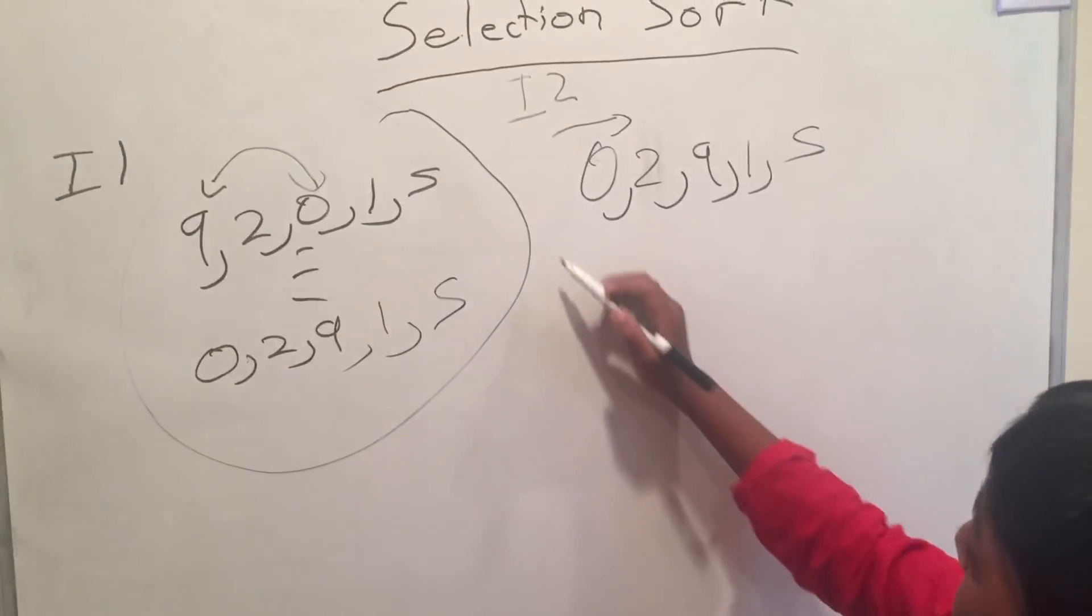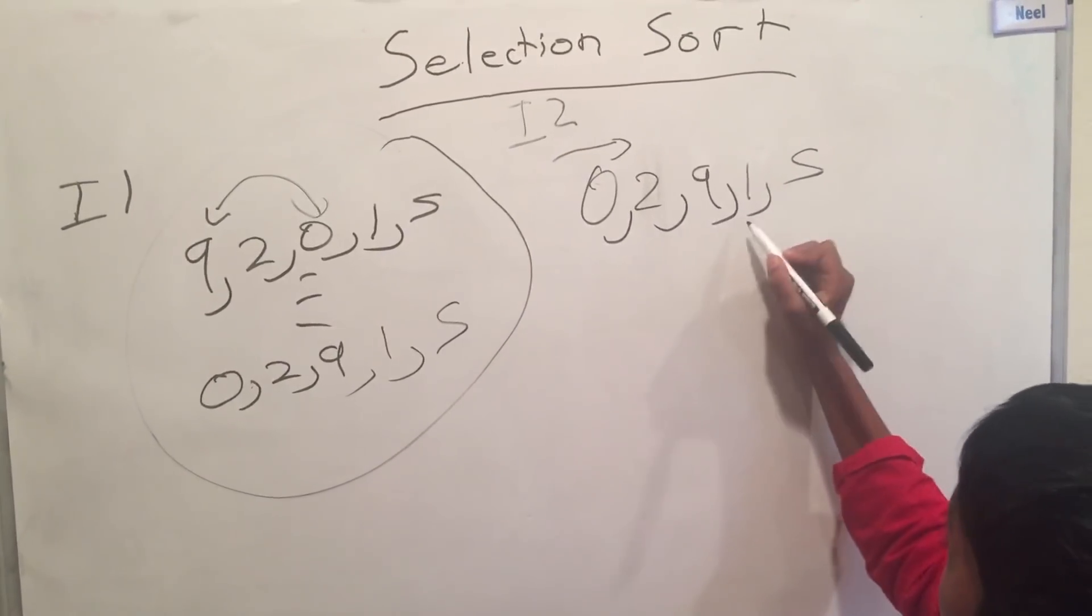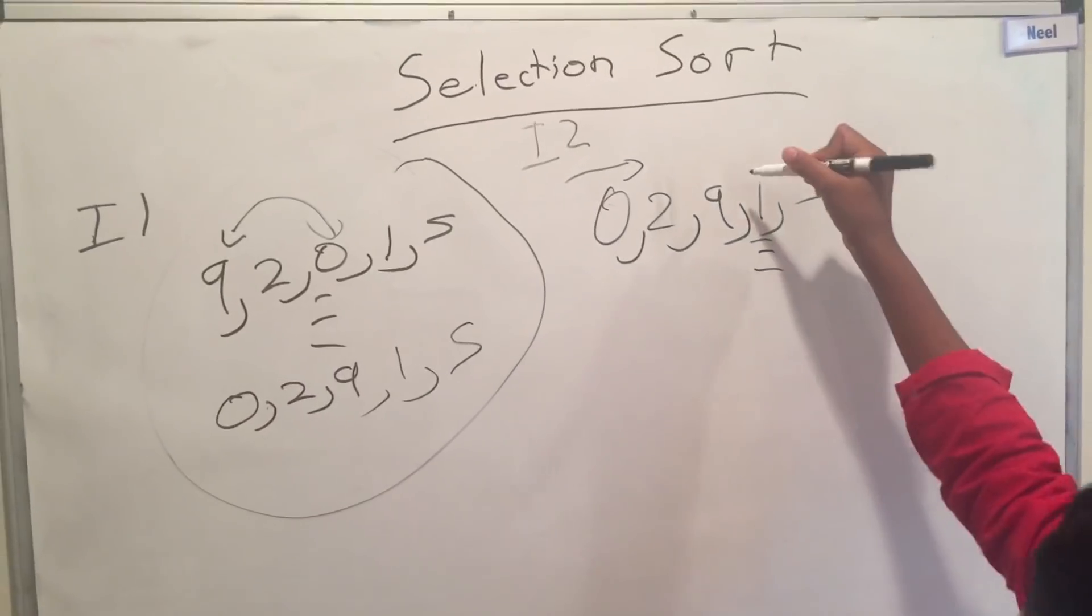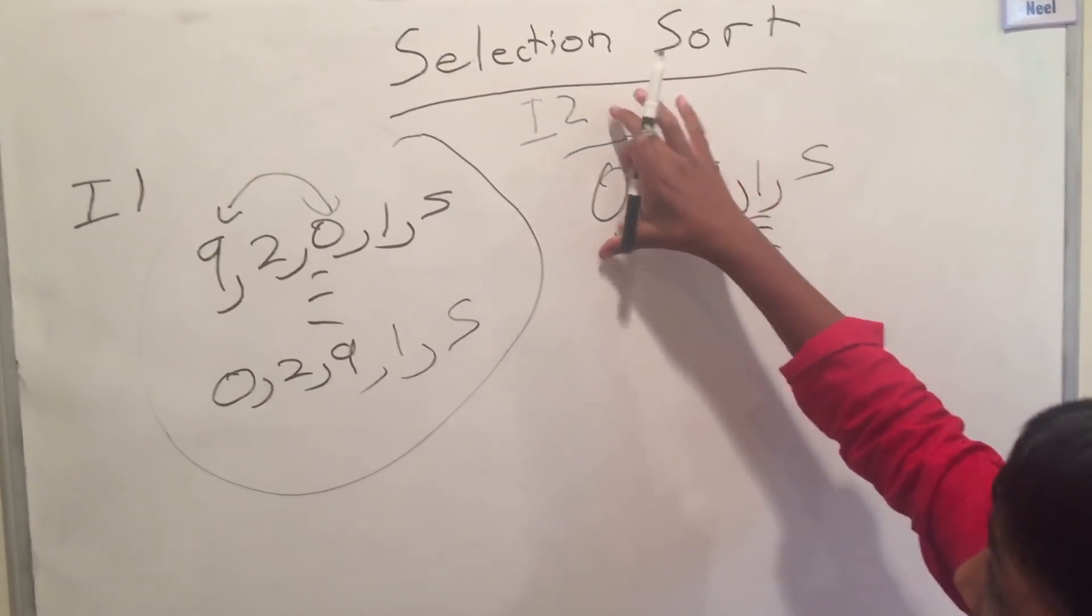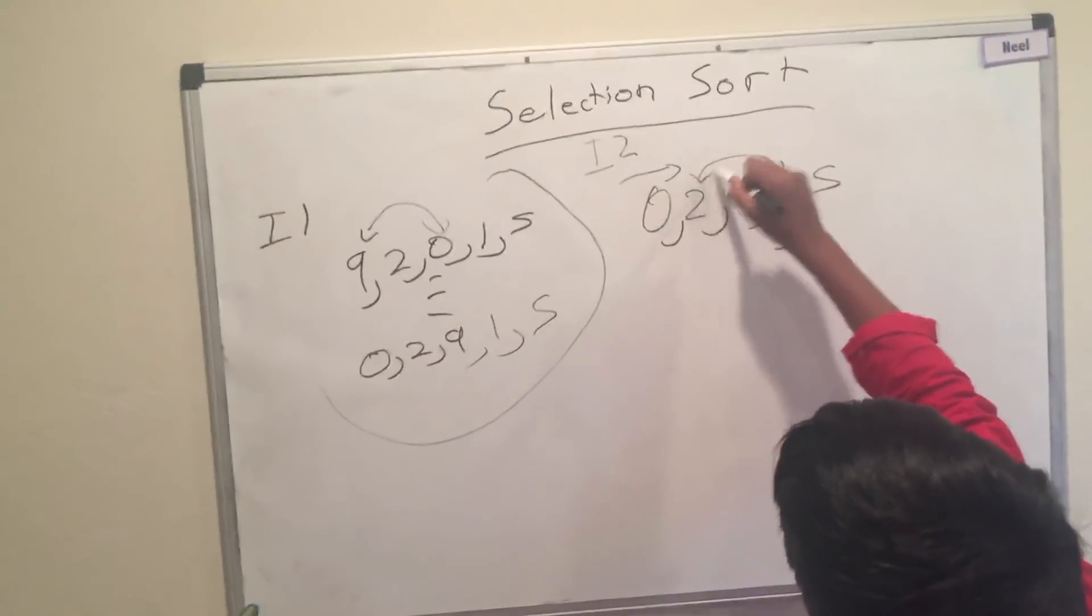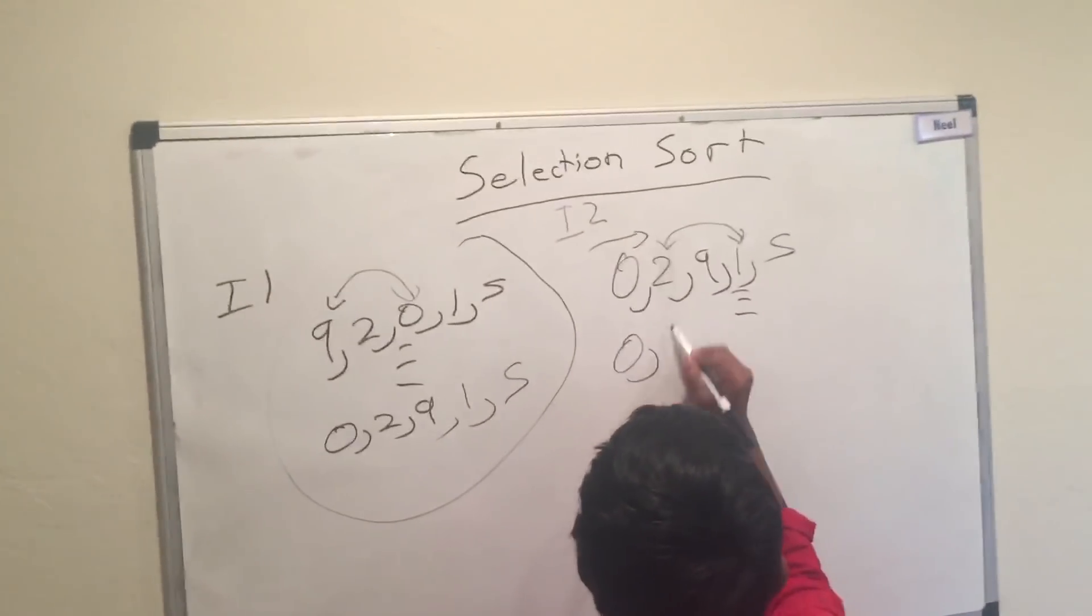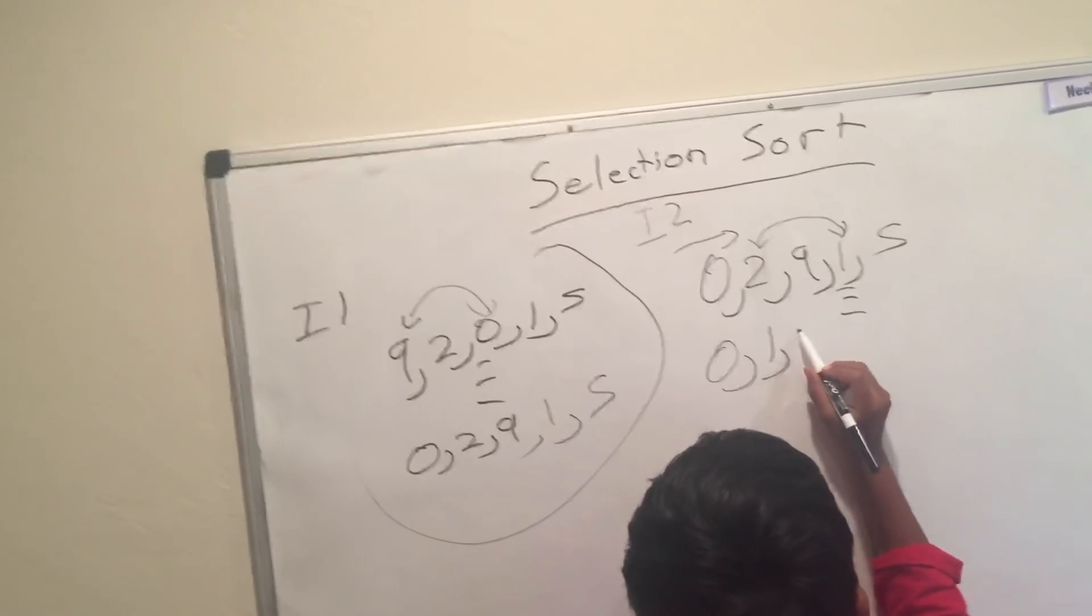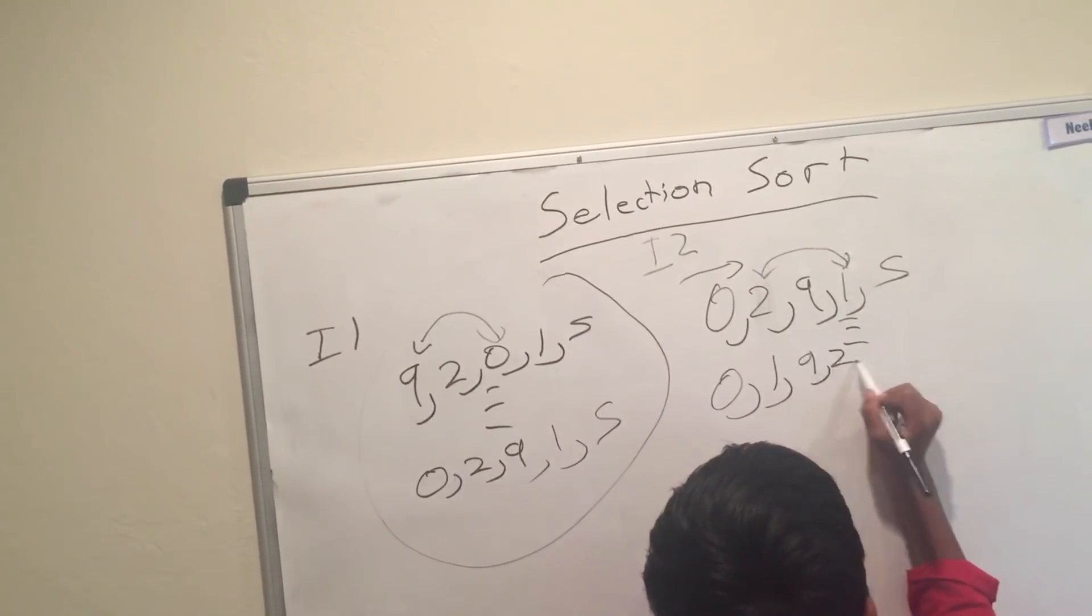So, now, what happens is you pick the second list. You look to the list, and you find this. Now, you know that this is a list, so you switch it with this. So, now, at the end of iteration 2, what you get is this.